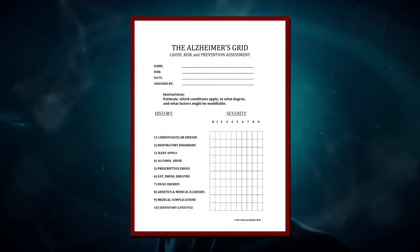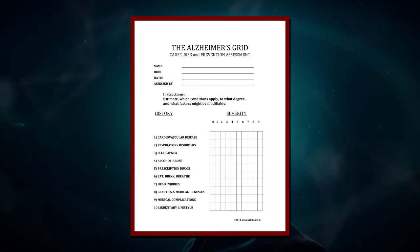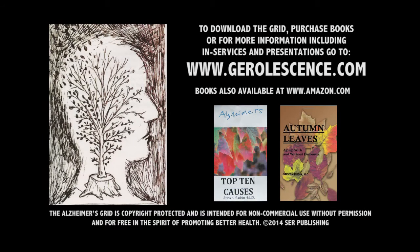I hope this information has been helpful. The purpose of the Alzheimer's Grid is to improve the quality of life for all individuals, with and without dementia. To use the Alzheimer's Grid, simply estimate which causes apply, to what degree, and what factors might be modifiable. To download the Grid, purchase books, or for more information, including in-services and presentations, go to www.gerolescents.com.